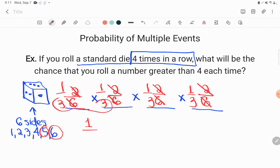And so what's the probability or the chance that I roll a number greater than four each time? It's one out of 81.